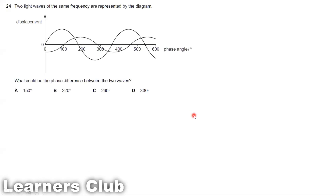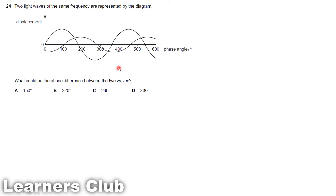Question 24. Two light waves of the same frequency are represented by the diagram. Same frequency means same time period. We need to find the phase difference between the two waves — the angular difference between the waves, which is known as the phase difference.